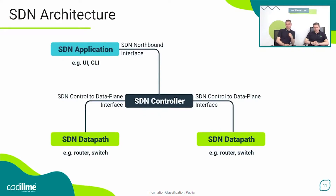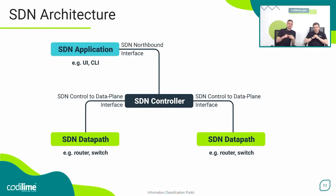Doing a deep dive into SDN architecture: you start with the SDN application — it may be a UI, a CLI, or typically it drives the SDN Northbound interface via API. With an API you can implement a custom application to automate or control all SDNs on the market. The high-level rule goes to the SDN controller, which computes what should be done in the underlying physical network to meet the user's requirements. Then via the SDN control-to-data-plane interface, it sends rules or configurations to physical devices. SDN data path components sit atop these physical devices and interact with them to apply the configuration.